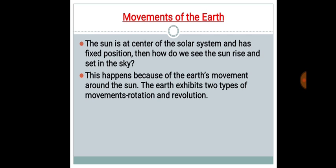First point is the movements of the earth. The sun is at center of the solar system and has a fixed position. Then how do we see the sun rise and set in the sky? This happens because of the earth's movement around the sun. The earth exhibits two types of movements: rotation and revolution.